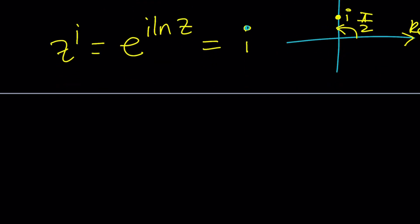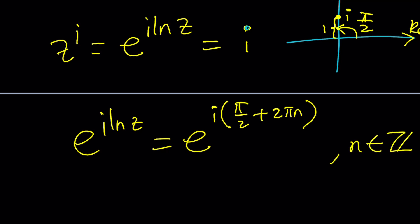And the modulus obviously is 1. Its distance from 0 is 1 unit. So e to the i ln z equals i which can be written as e to the power i times the theta which is pi over 2 plus 2 pi n where n is an integer. So far so good? Awesome.